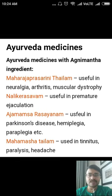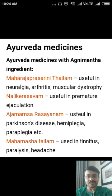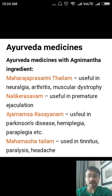Some Ayurvedic medicines with Agni Mantha as an ingredient include: Maharaja Prasarani Taila, which contains Agni Mantha and is useful in neuralgia, arthritis, and muscular dystrophy. Mulli Kerasava, useful in premature ejaculation. Aja Mamsa Rasayanam, useful in Parkinson's disease, hemiplegia, and paraplegia-like disorders — it contains Agni Mantha as an ingredient. Mahamasha Taila, a commonly used drug, used in tinnitus, paralysis, and headache.